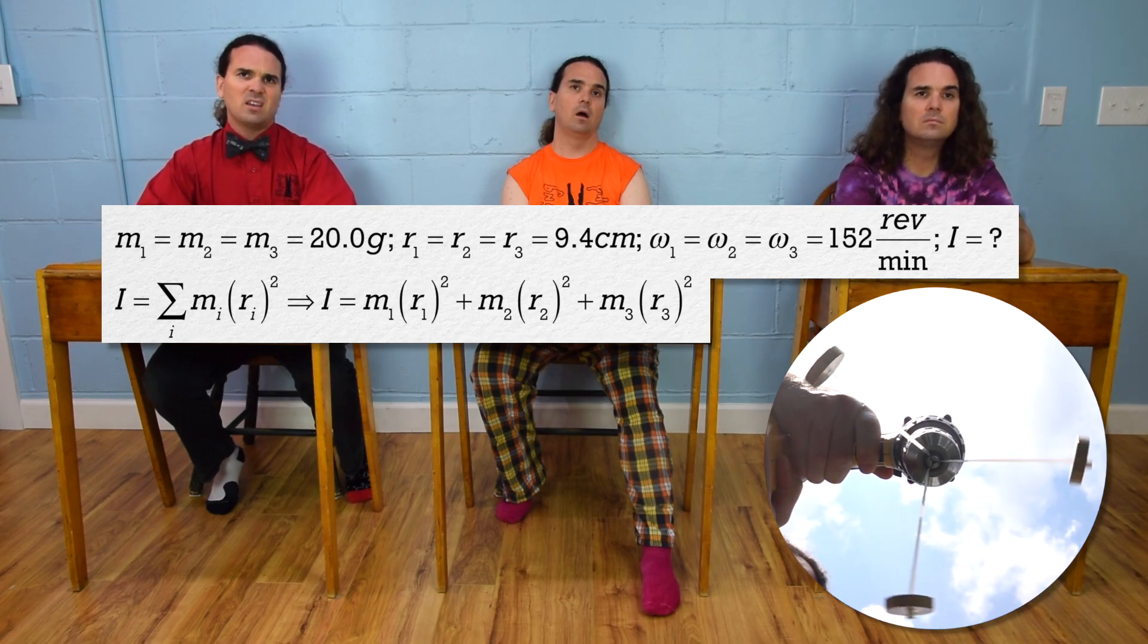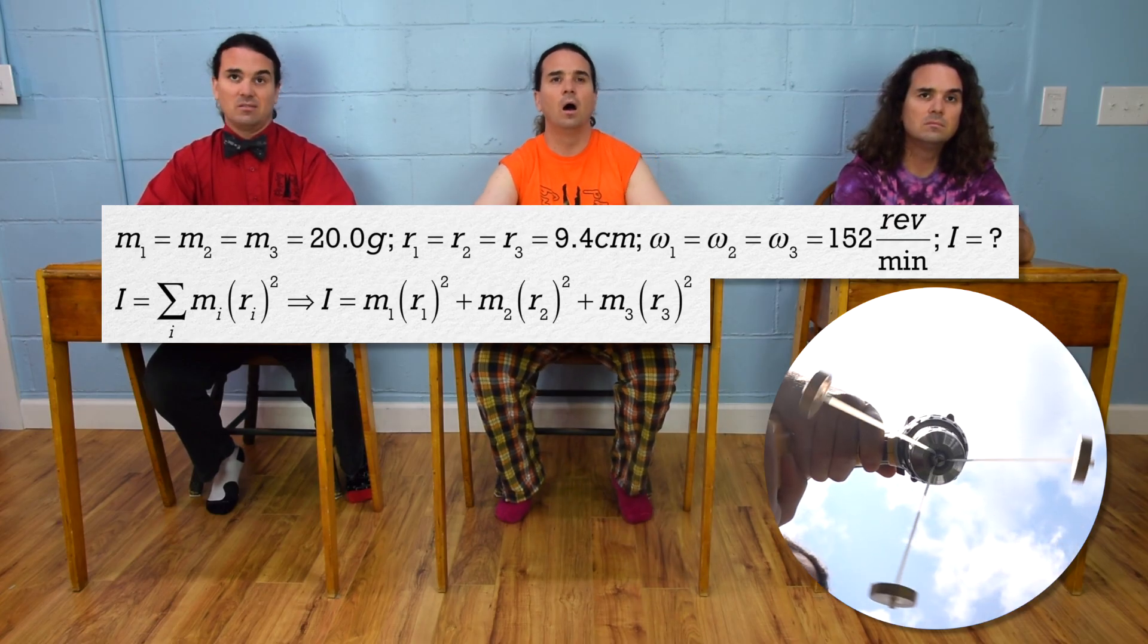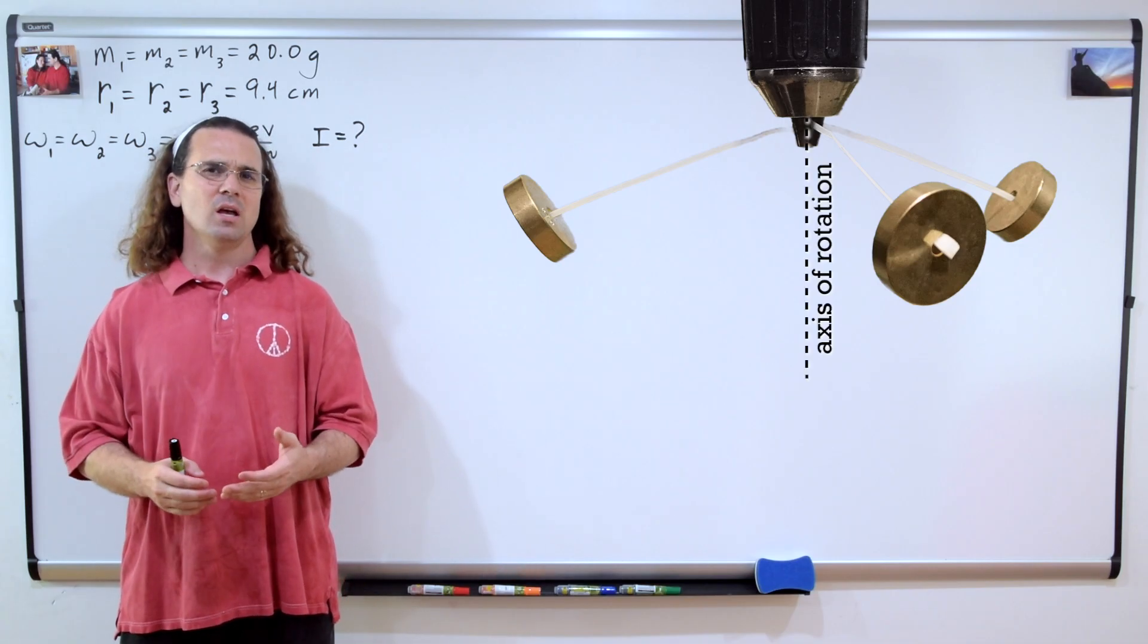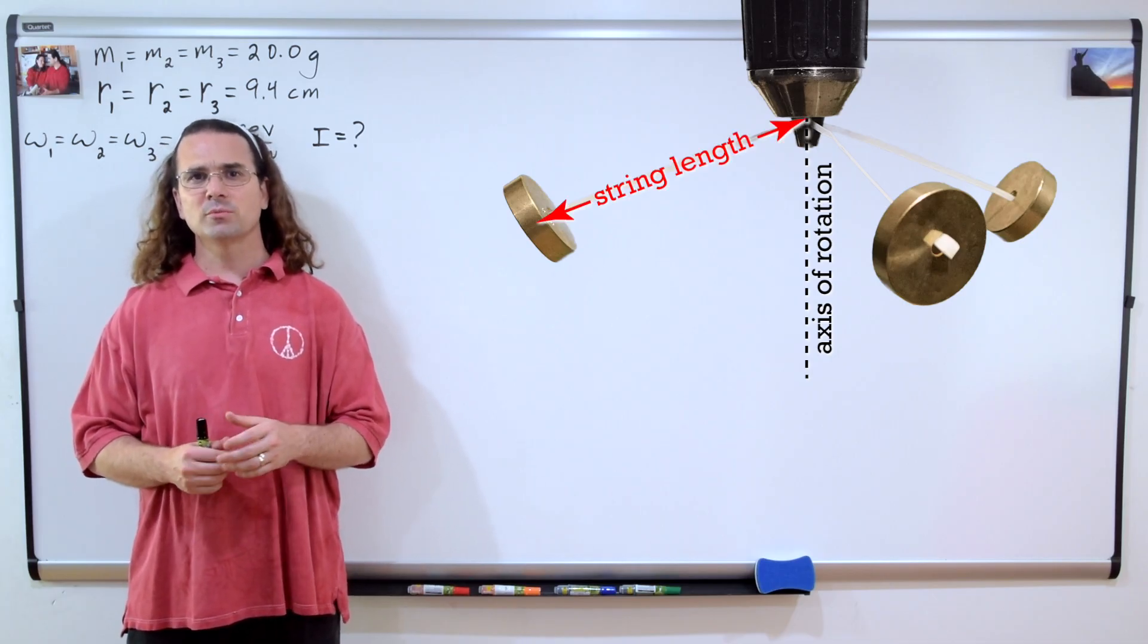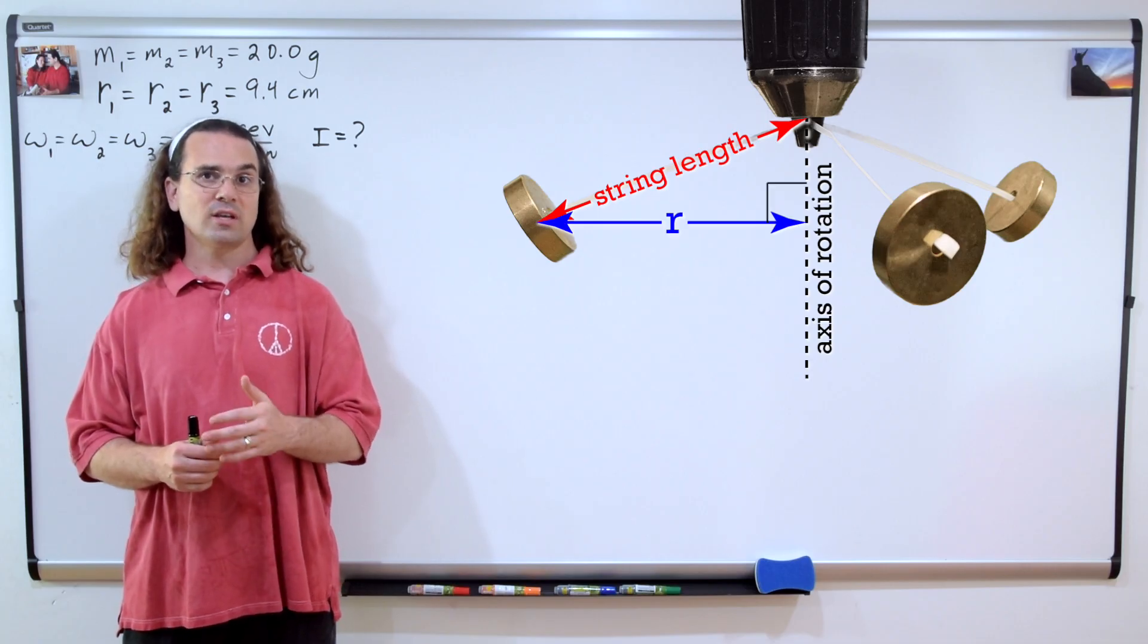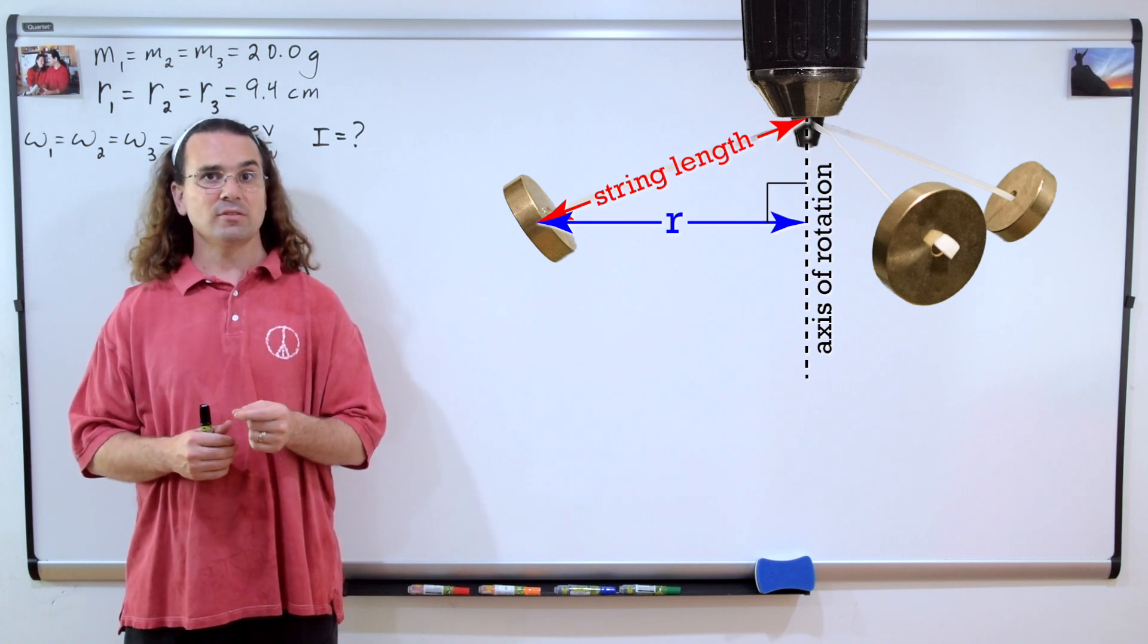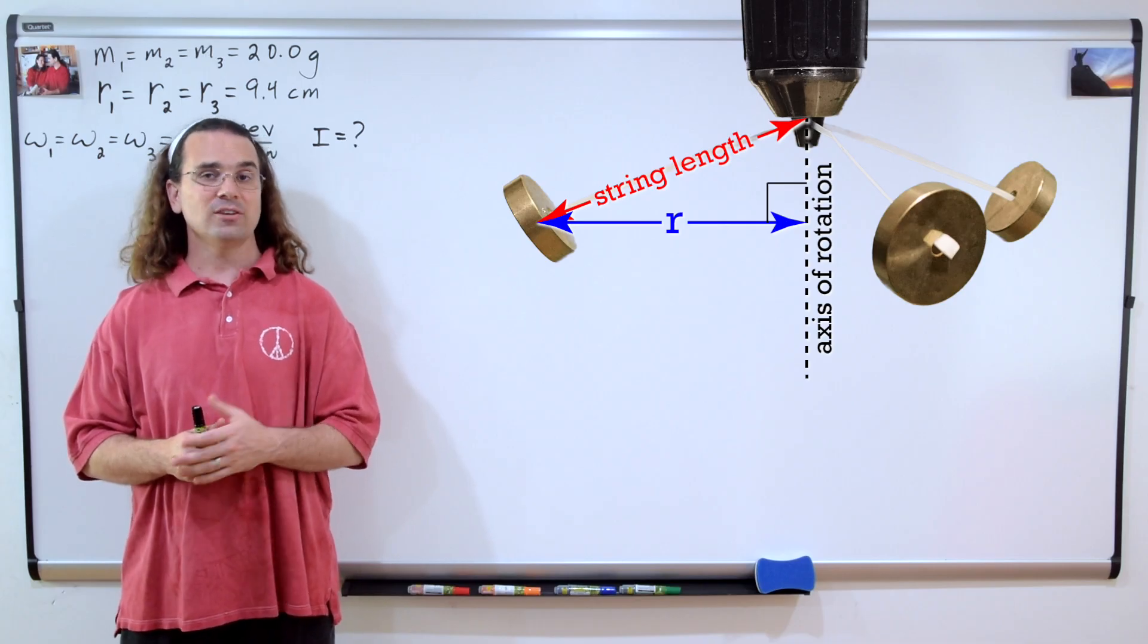Bo said r was the radius, but it is actually the distance from the axis of rotation, right? Actually, radius and distance from axis of rotation are the same thing in this example. But we need to be really careful. The length of the string forms the hypotenuse of a right triangle, and the radius is the horizontal side of that triangle. Because the distance from the axis of rotation to the object is the radius of the circle described by the revolving object, the radius and r value are the same.